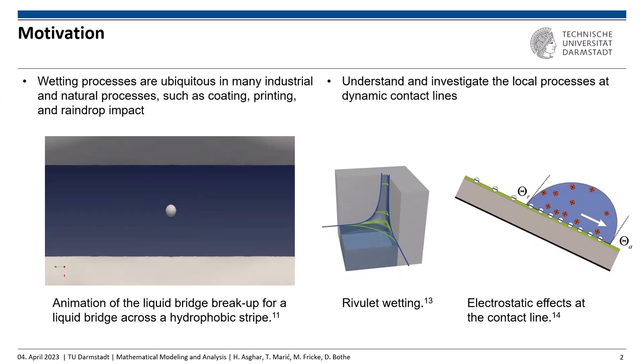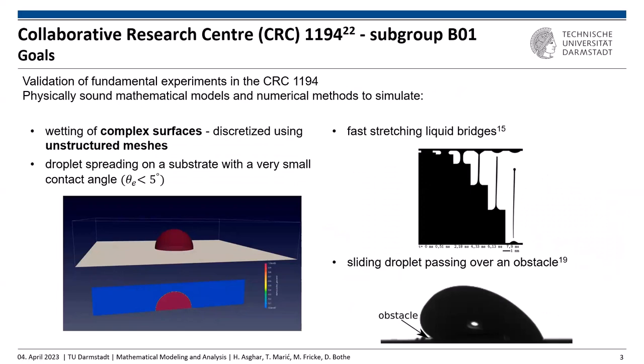In Collaborative Research Center 1194, subgroup B01 — my group — we aim to validate fundamental experiments of colleagues by numerical methods that simulate wetting processes on complex surfaces, including domain discretization with unstructured meshes. Examples include droplet spreading on a substrate with very small contact angles, fast stretching of liquid bridges, and contact line impact on chemical or topographical obstacles. We investigate what happens to the contact line dynamics during these processes.